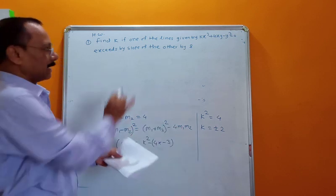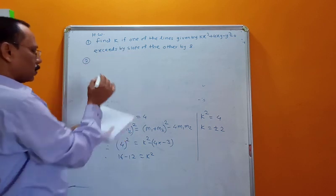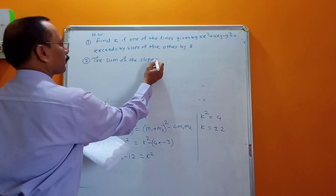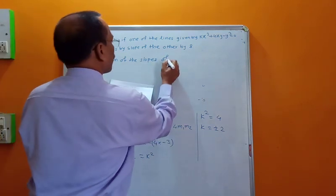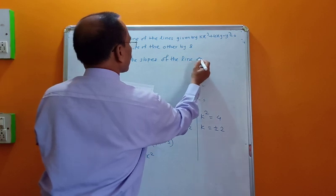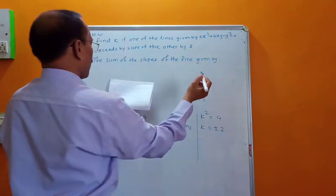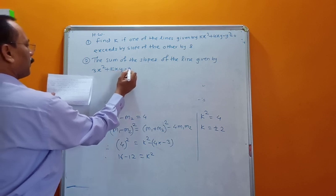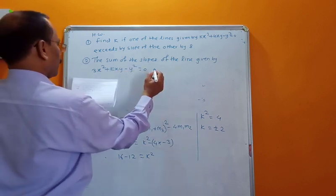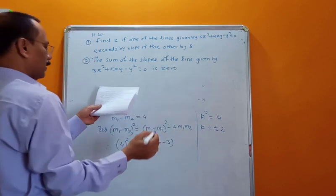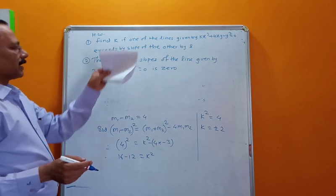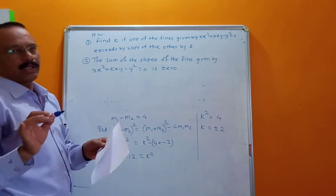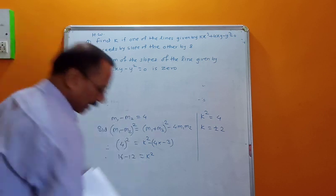Homework Problem 2: The sum of the slopes of the lines given by 3x² + kxy − y² = 0 is 0. Sum of slopes is 0 means m1 + m2 = 0 is the condition. Use the sum of slopes formula to find k.